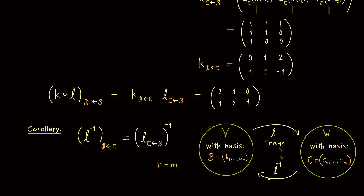So please remember this general effect: if the dimension of V is unequal to the dimension of W, then a linear map is never invertible. Other maps could be invertible, but linear maps cannot be. So there we have it — now you know how to calculate matrix representations for compositions and invertible maps. Let's discuss more aspects of this in the next videos. I really hope we meet again, and have a nice day. Bye bye.